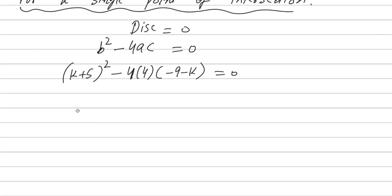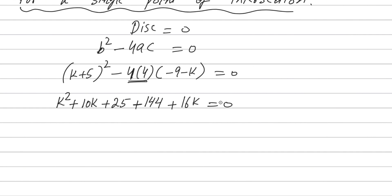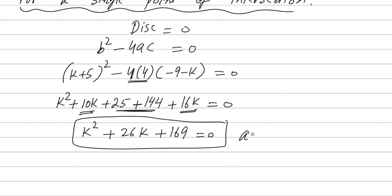Now expand the square: k squared plus 2 times 5 times k plus 25, which gives k squared plus 10k plus 25. Then minus 16 multiplied by minus 9 is positive 144, and plus 16k. Combining the like terms: k squared plus 26k plus 169 equals 0. We got the required result.